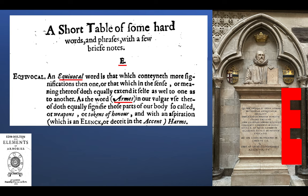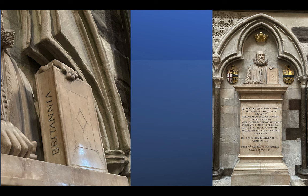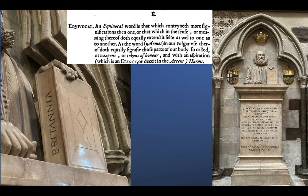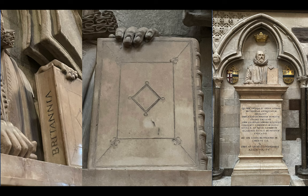The example given is the word 'arms' — in common use it equally signifies those parts of our bodies called arms, or weapons, or tokens of honor. With an aspiration — which is a deceit in the accent — as in 'harms' versus 'arms,' it's still arms. Notice arms also refers to parts of our body. I suggest the book Camden holds — the Britannia, also indicated on his monument — is equivocal.